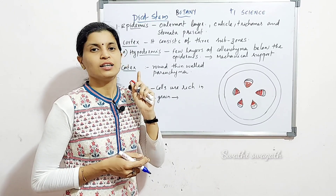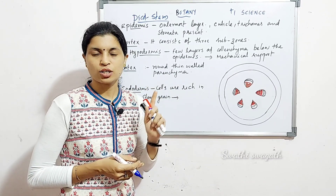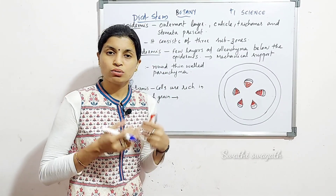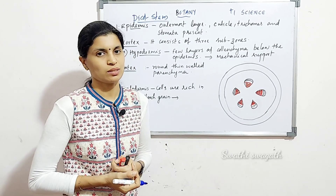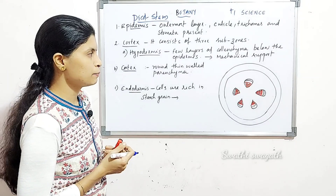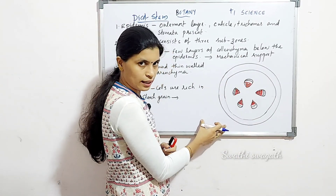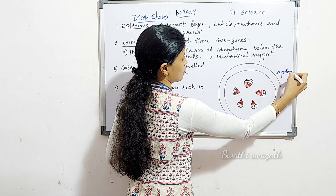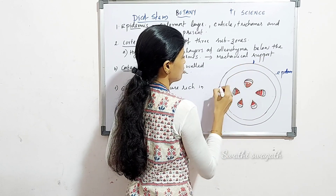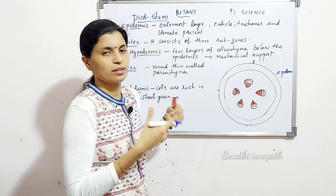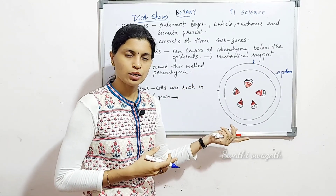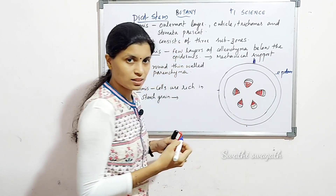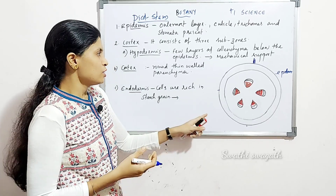Cuticle is present. Here, trichomes are present instead of root hairs. Trichomes are a multicellular structure, whereas root hair is unicellular, but trichomes are multicellular. Sometimes branches are present in trichomes.